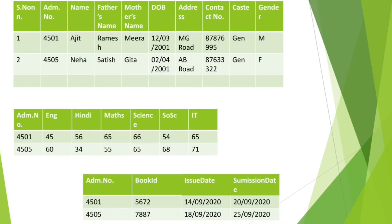For example, you can see here three different tables. The first table stores the serial number, admission number, name, father's name, mother's name, date of birth, address, contact number, caste and gender of the student. Here, the admission number is the primary key because it is unique for every student. In the second table, we have stored admission number and marks in various subjects. We are not storing the name of the student, his class, his father's name, mother's name and other details again. We are linking these two tables using the field admission number.